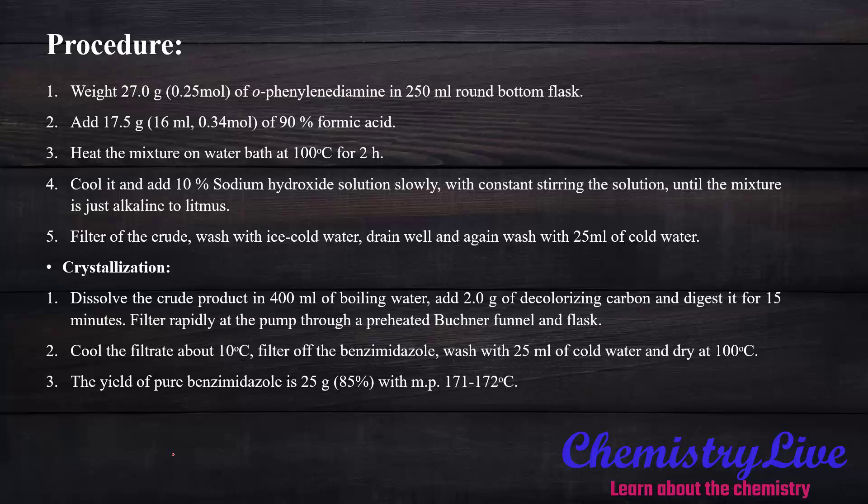We will switch to the procedure. Procedure is so simple. First we will take a round bottom flask. In this round bottom flask we will put a stirrer. We add in that round bottom flask 27 grams of orthophenylenediamine compound, 17.5 grams or 16 ml formic acid.